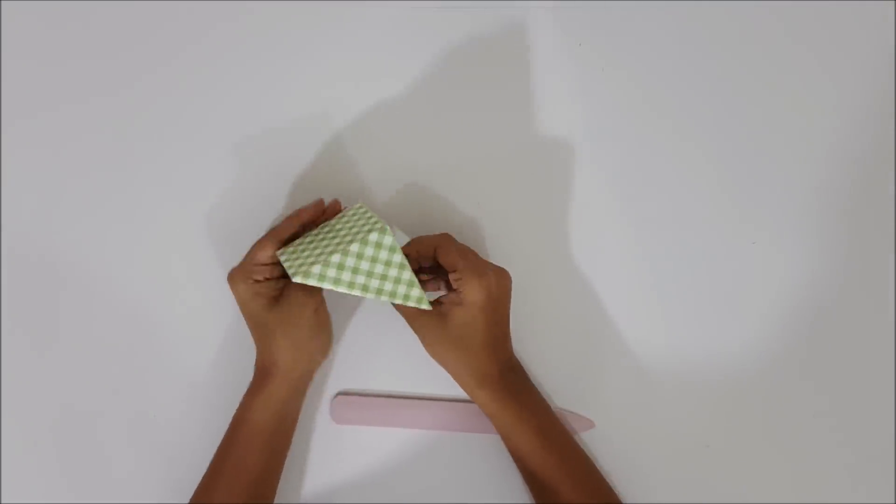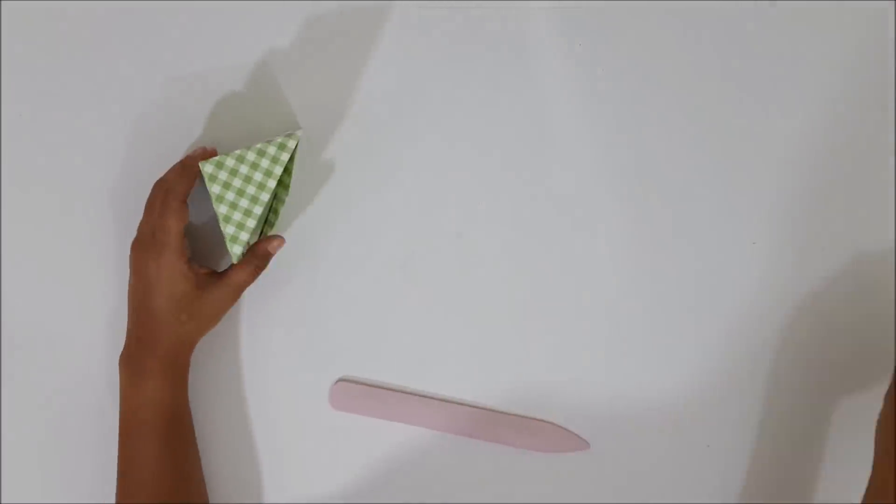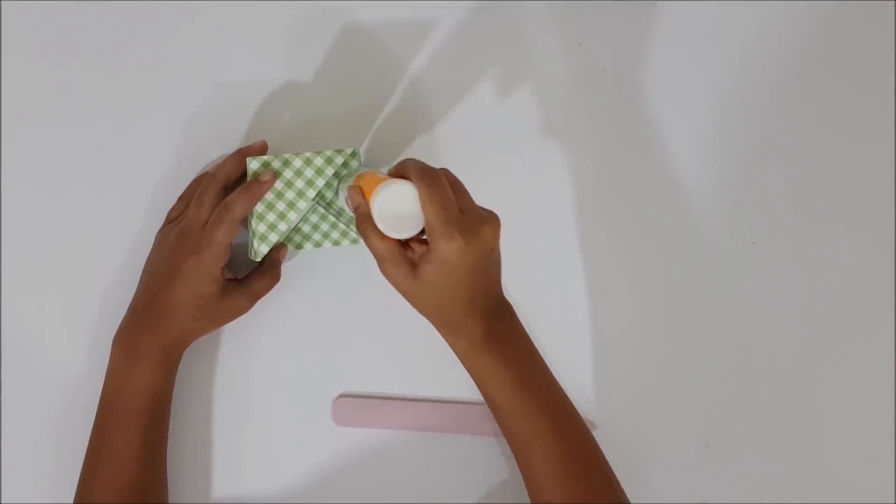As you can see, the diagonal half of the cube is ready. Now stick both the last triangle folds to secure them from opening.